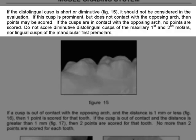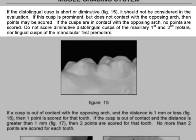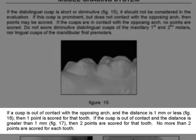If the cusps are in contact with the opposing arch, no points are scored. Do not score diminutive distal lingual cusps of the maxillary first and second molars, nor lingual cusps of the mandibular first premolars. If a cusp is out of contact with the opposing arch and the distance is one millimeter or less, then one point is scored for that tooth. If the cusp is out of contact and the distance is greater than one millimeter, then two points are scored for that tooth.